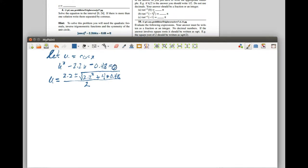...then u is equal to minus b plus or minus the square root of b squared minus 4 times a, which is just 1, times c, in this case minus 0.48, that's why that becomes a plus, all over 2.